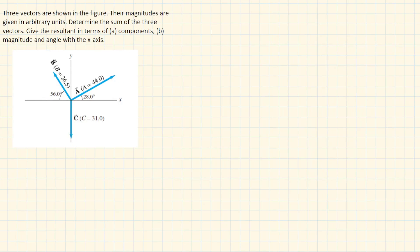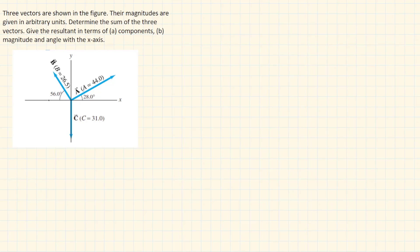Here is another example on vector addition. Three vectors are shown in the figure; their magnitudes are given in arbitrary units. Determine the sum of the three vectors — give the resultant in terms of components and in terms of magnitude and angle with the x-axis. Vector A has a magnitude of 44.0 and is inclined 28.0 degrees from the positive x-axis. Vector B has a magnitude of 26.5 and is inclined 56.0 degrees from the negative x-axis.